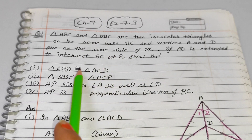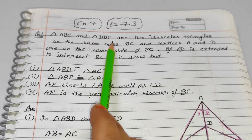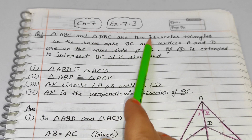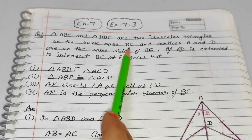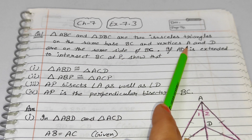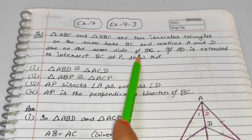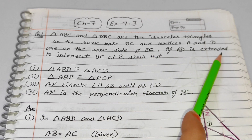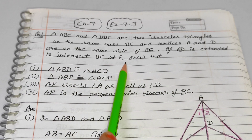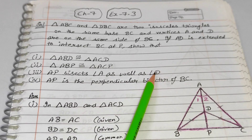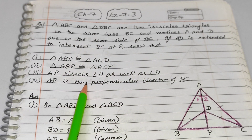The first question is: Triangle ABC and triangle DBC are two isosceles triangles on the same base BC, and vertices A and D are on the same side of BC. If AD is extended to intersect BC at P, show that...